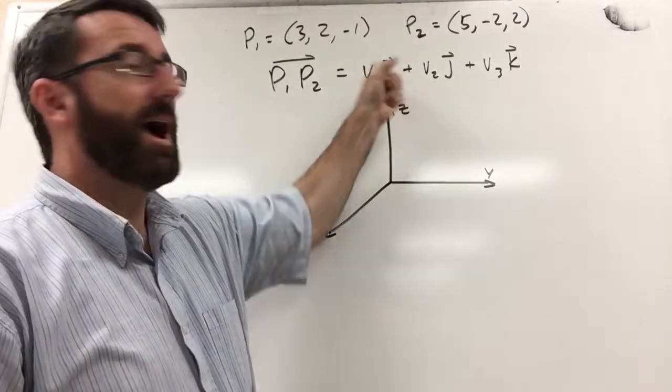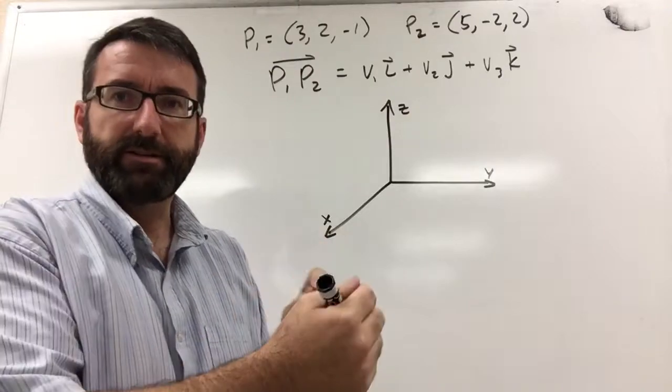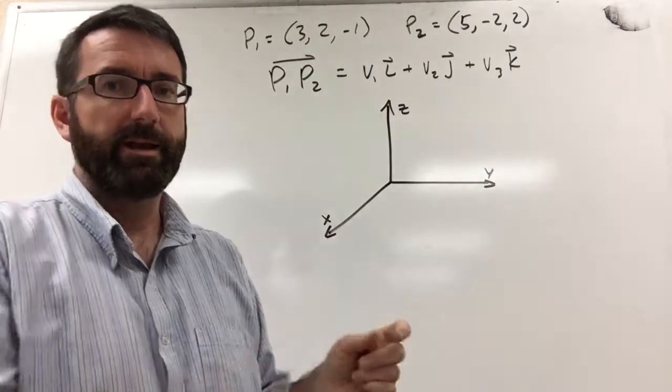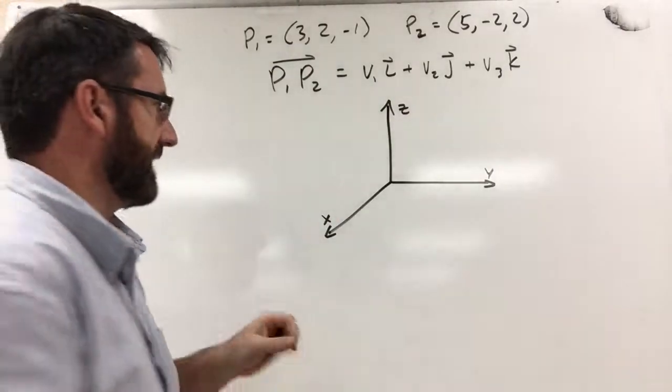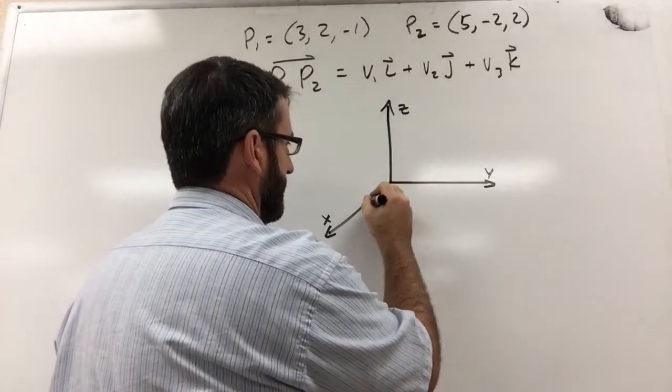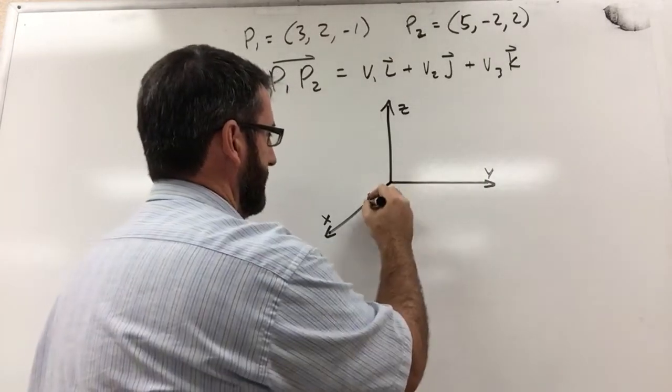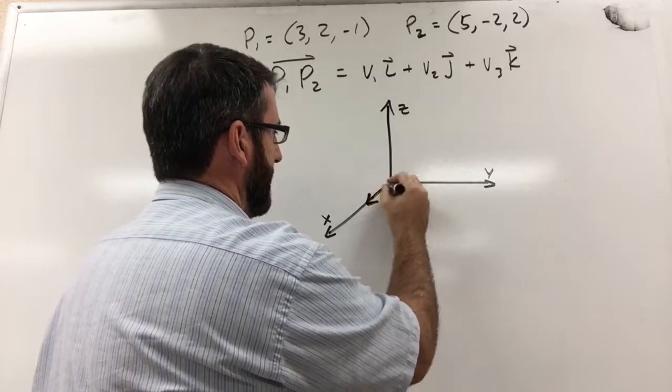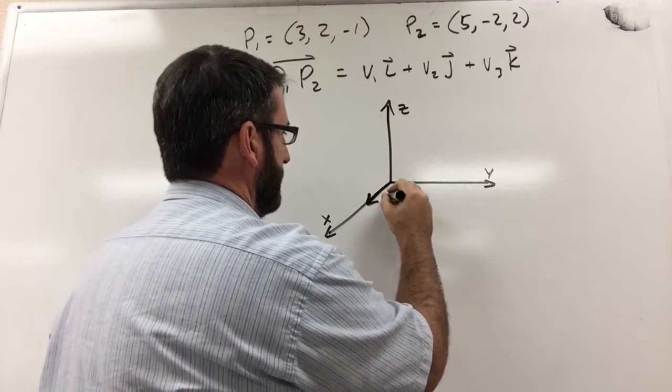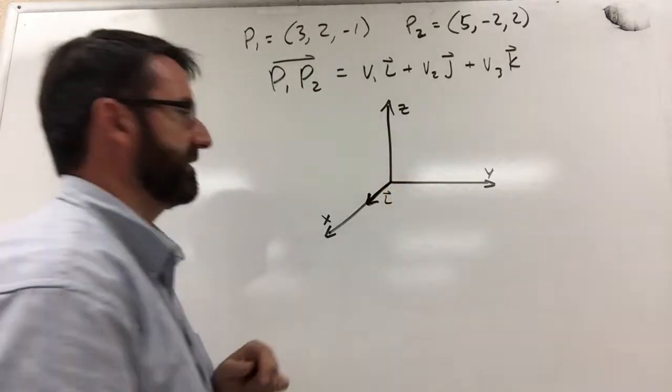The i is a unit vector, it's a vector of length one in the direction of the x-axis. So this, let's call this a length one, this vector right here would be the vector i.